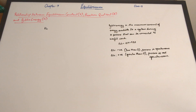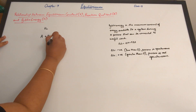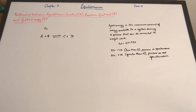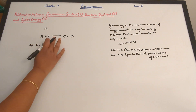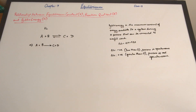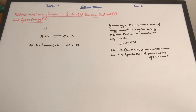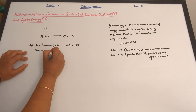Let's take a chemical reaction: A plus B gives rise to C plus D. The first case is where delta G for this reaction is negative. When delta G is negative, the process is spontaneous, which means the forward reaction takes place.